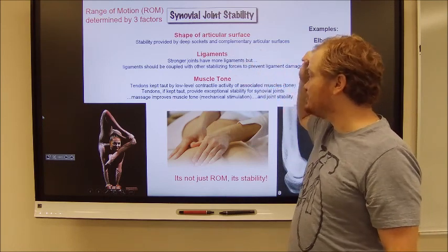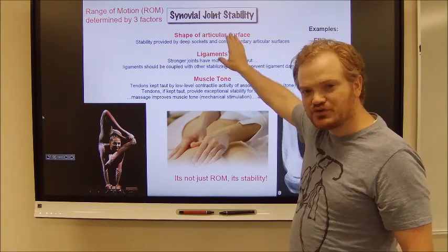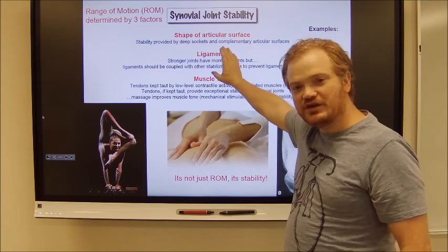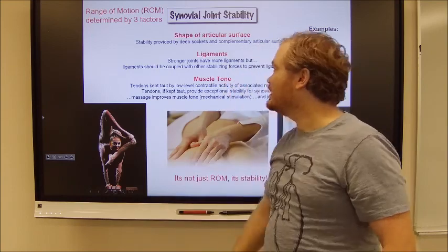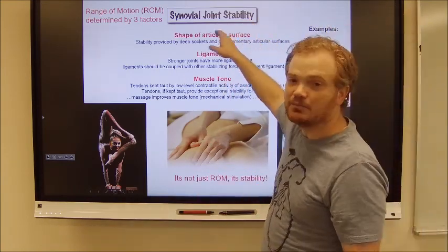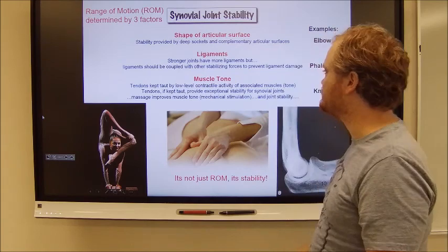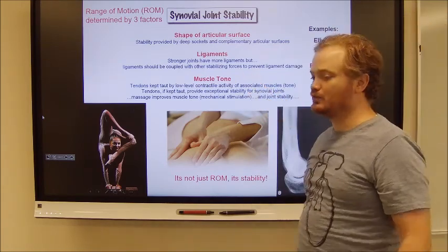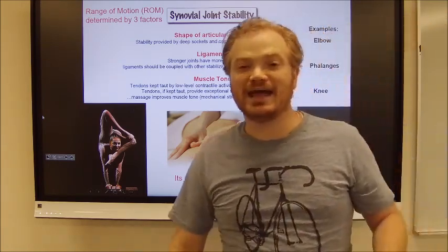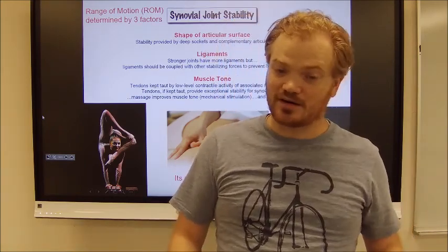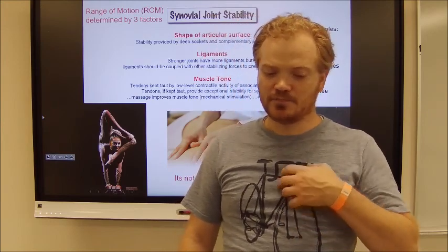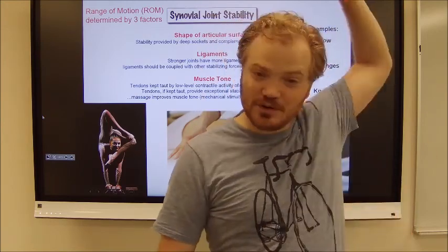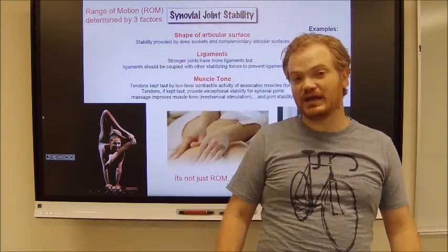So ligamentation: the tighter the ligaments, the more stable the joint, but the less range of motion you experience. If your ligaments are quite loose, you have more range of motion but your joints are not very stable — that's like our contortionist friend. And then there's muscle tone: the more muscle tone you have, the more stable your joints are but the less range of motion. If your muscles are not toned at all, your range of motion tends to be extraordinarily high and your joints are very unstable and more prone to dislocations.